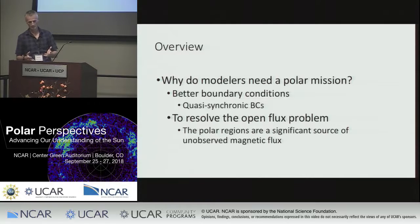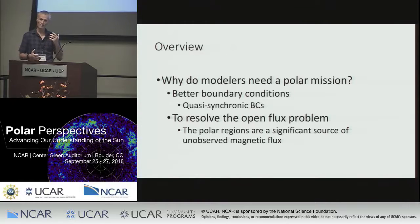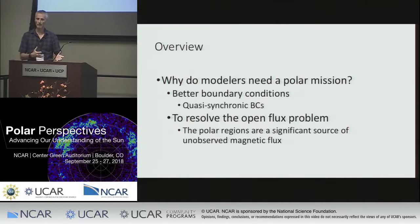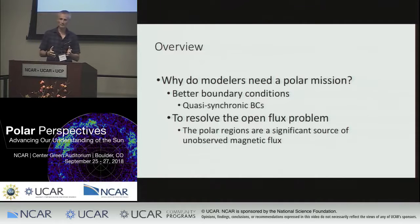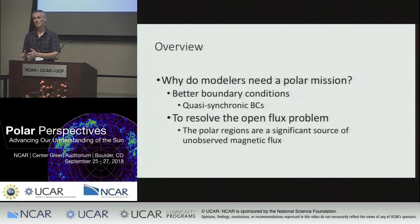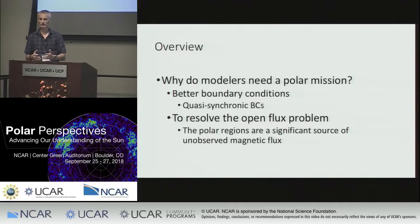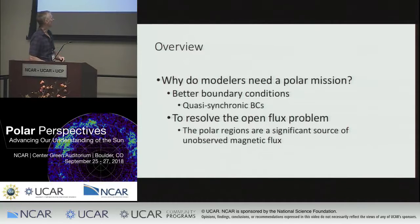It's a problem that all of the global models suffer from: basically, if you drive a model with photospheric magnetic field observations — whether it's the potential field or MHD, polytropic or with energy transport or wave turbulence — you still predict that the interplanetary magnetic field at 1 AU is about half, sometimes even a third, of the value actually measured by in-situ spacecraft. So it's a real deficiency in the models, and I think that a polar mission could resolve that.